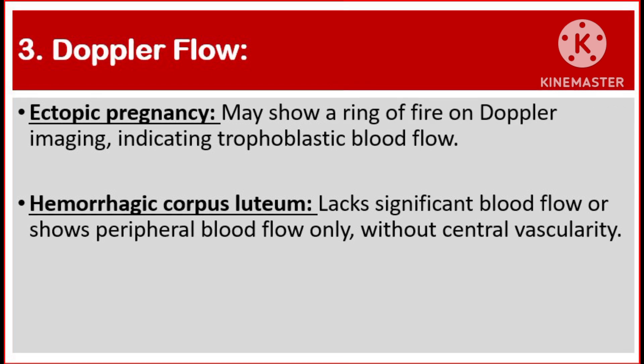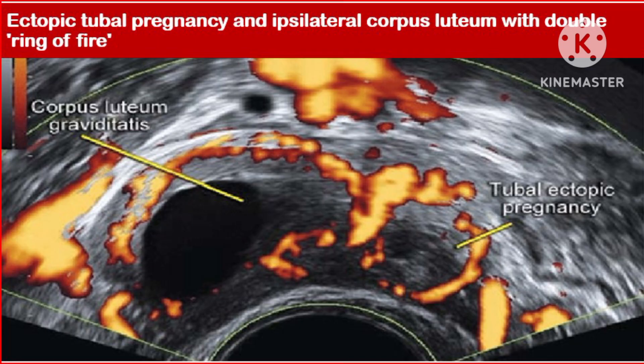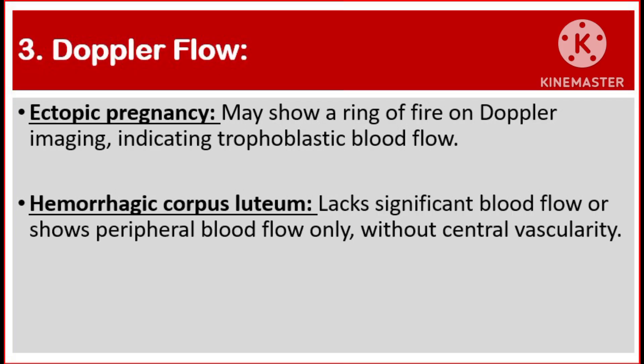Number three, Doppler flow. Ectopic pregnancy may show a ring of fire on Doppler imaging, indicating trophoblastic blood flow. But hemorrhagic corpus luteum lacks significant blood flow or shows peripheral blood flow only without central vascularity.